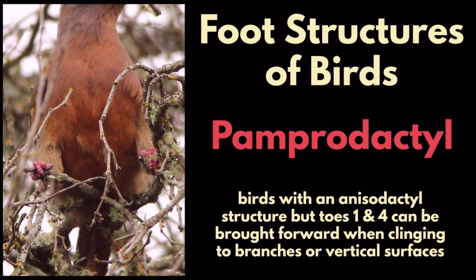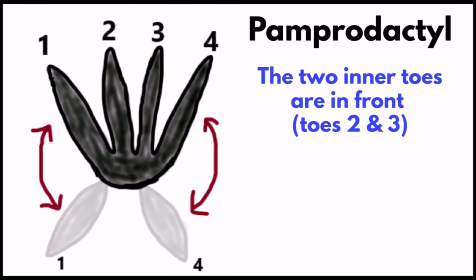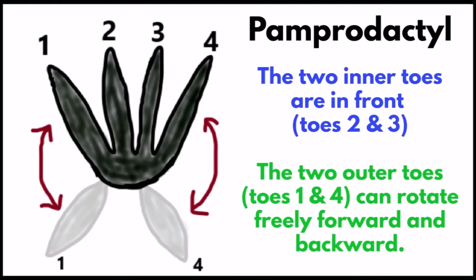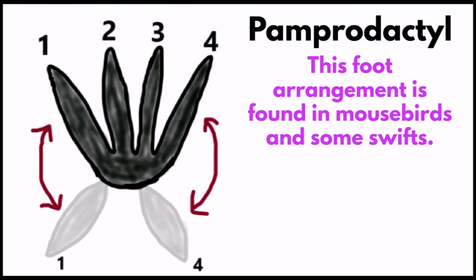Pamprodactyl: birds with an anisodactyl structure but toes one and four can be brought forward when clinging to branches or vertical surfaces. The two inner toes — toes two and three — are in front, while the two outer toes, one and four, can rotate freely forward and backward. This foot arrangement is found in mouse birds and some swifts.